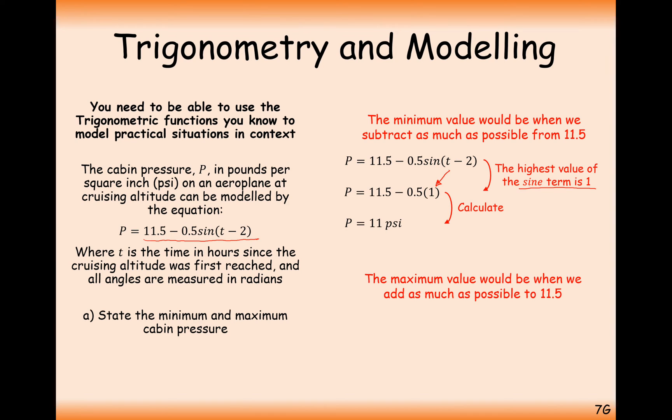For a maximum, we want to be subtracting a number as small as possible. If we subtract a negative number, that's going to make it positive and make the 11.5 even bigger. Set sine T minus 2 equal to minus 1, the minimum value of the sine function. Then we have minus 0.5 times minus 1, which gives us exactly 12 psi.